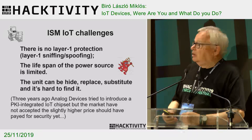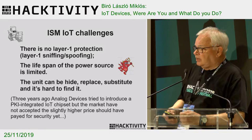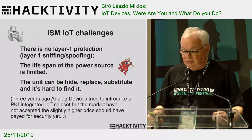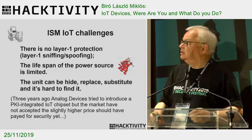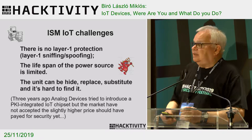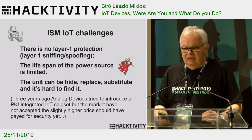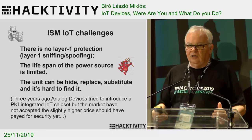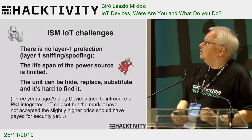The other problem is the lifespan of the power supply. If you want to use an IoT device independent from the main supply, it must have a battery, and the battery size is very limited — meaning the lifespan can be short. It is easy to stop the device, easy to hide it, easy to replace or substitute it with another unidentified system. And if you sniff the network for a long time, you can obtain the identifier and read and write to the substituted machine.